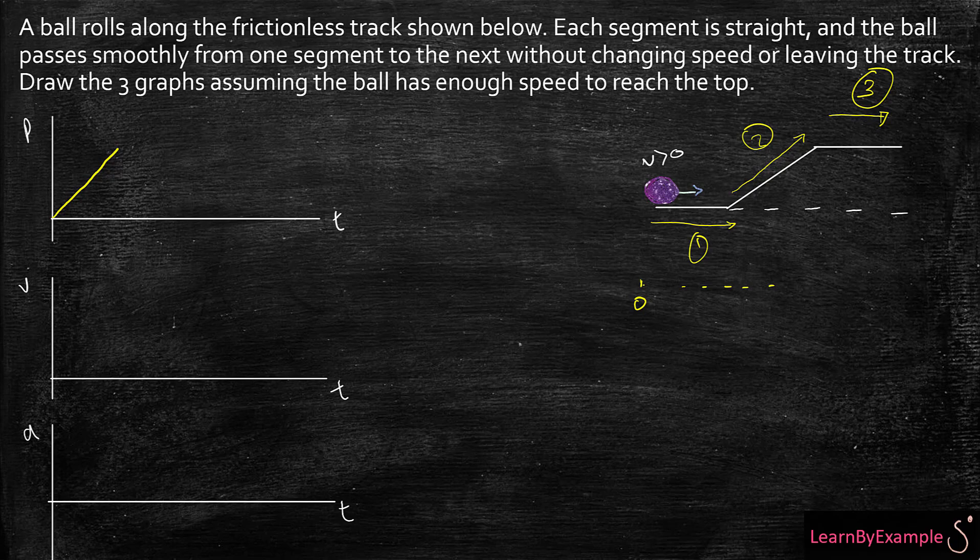Now for the second part, because my ball is rolling up the hill, velocity is going to be actually smaller. So what's going to happen is that I'm going to increase my position at a slower rate, so it's going to be slowing down.